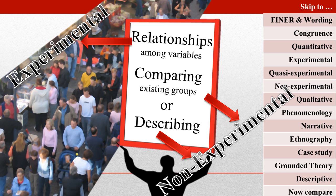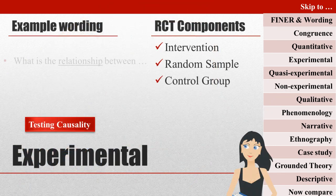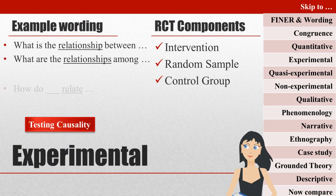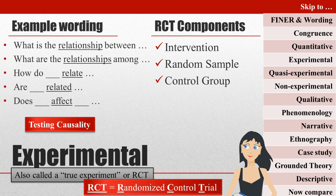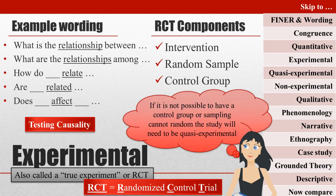Often, quantitative researchers test causality to answer questions about the relationships among variables. Experimental research is designed to test causality. If your question asks about how variables are related, a randomized controlled trial is the best option. Randomized controlled trials have a classic experimental design and are sometimes simply referred to as experimental studies.